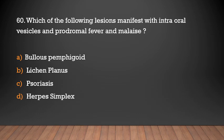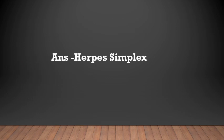Which of the following lesions manifests with intraoral vesicles and prodromal fever and malaise? Bullous pemphigoid, lichen planus, psoriasis, herpes simplex. Answer: Herpes simplex.